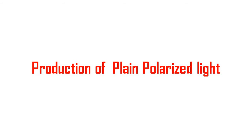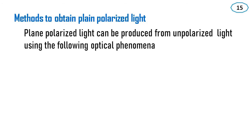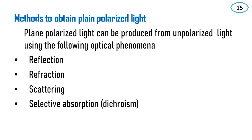Production of Plane Polarized Light. There are different methods to obtain plane polarized light. Plane polarized light can be produced from unpolarized light using the following optical phenomena: Reflection, Refraction, Scattering, Selective Absorption (also known as Dichroism), and Double Refraction.